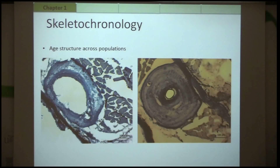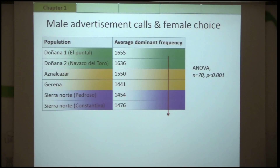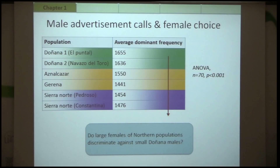I also did a skeletal chronology analysis — still ongoing — to look at the age structure across populations and assess whether the small individuals in Doñana actually do mature young. Additionally, I described the male advertisement calls. The dominant frequency of males is an honest signal that small males cannot fake; the dominant frequency of Doñana populations is higher than that of the Sierra Norte populations. We are also interested in whether large females from northern populations discriminate against small males in Doñana, and we have the data from a female behavioural assay in hand.